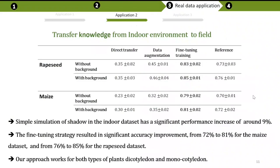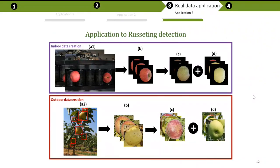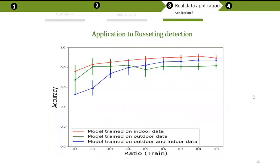Here you can see results with and without background removal, as we tried to remove background in the field. Another application is rooting detection: we have indoor datasets for rooting and applied fine-tuning for an outdoor dataset acquired in the field. The red curve represents training and testing in indoor data; the green curve is trained and tested on outdoor data; and the blue curve shows that adding some outdoor data during training of the indoor model achieves better performance than using only outdoor images.